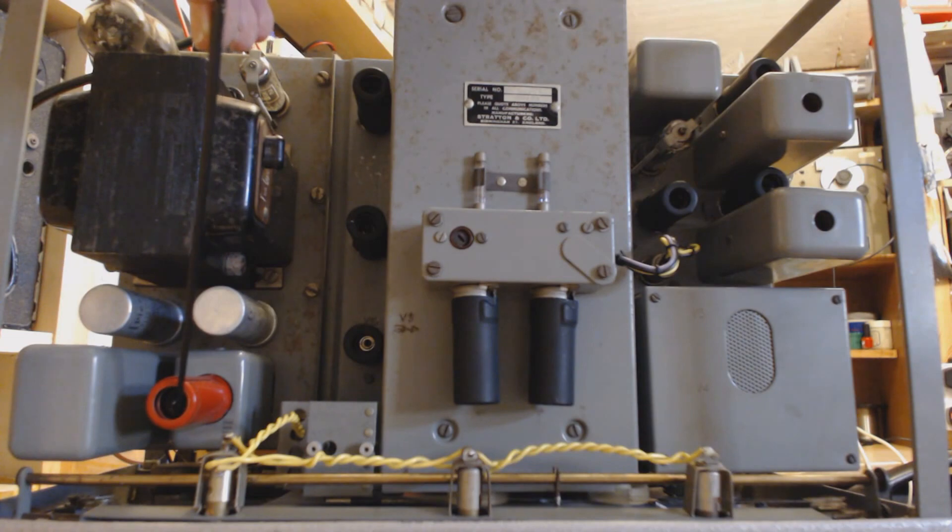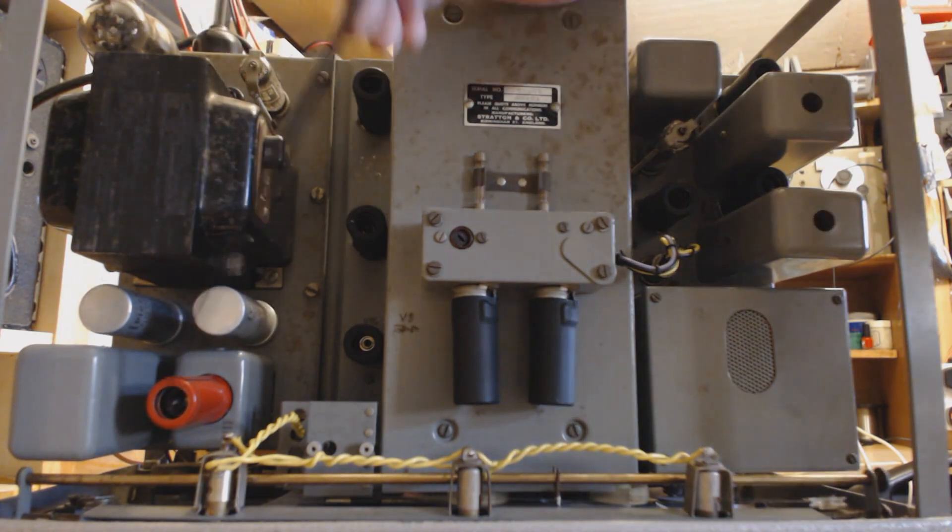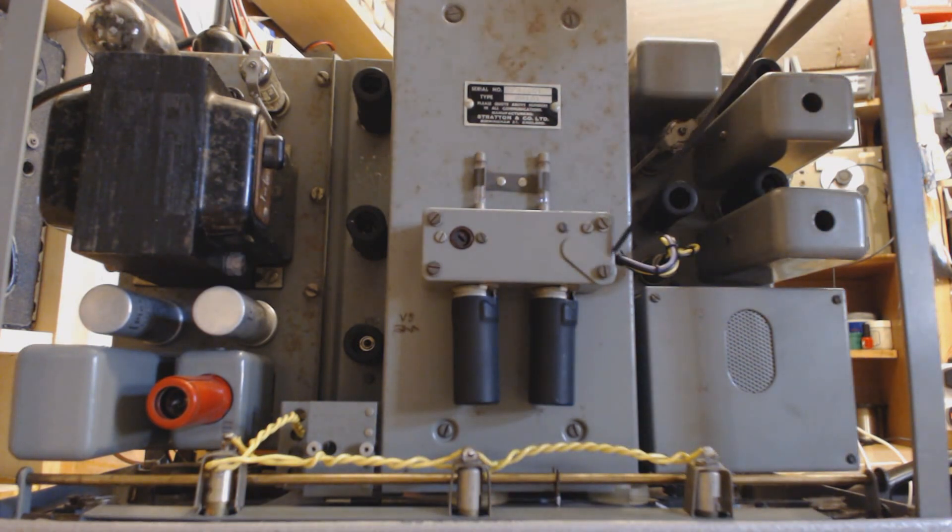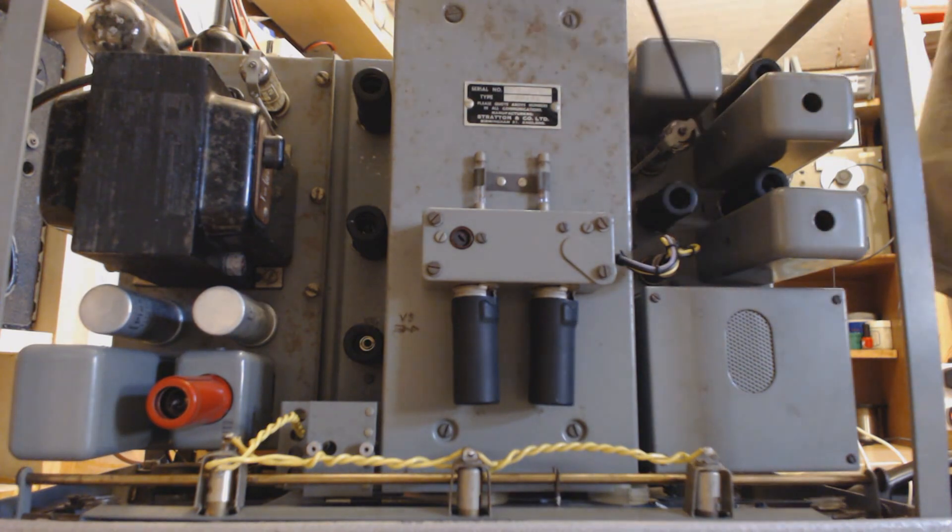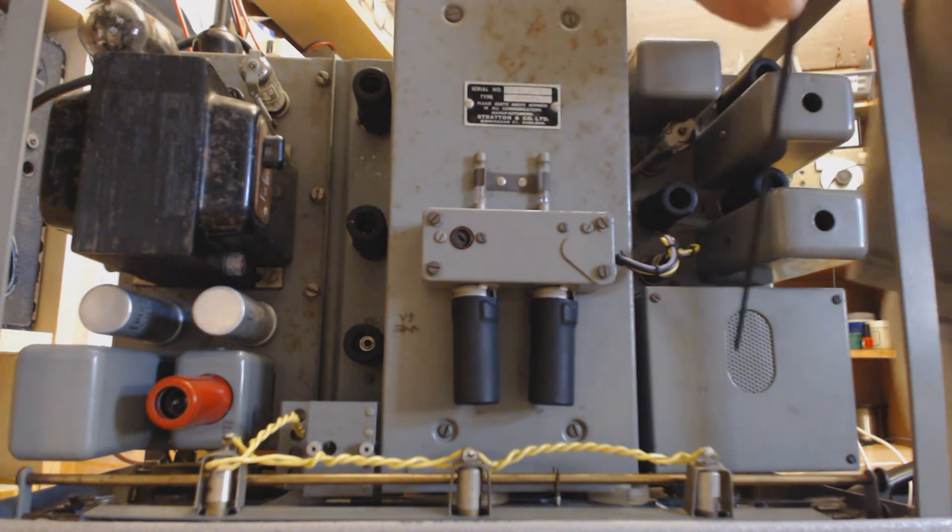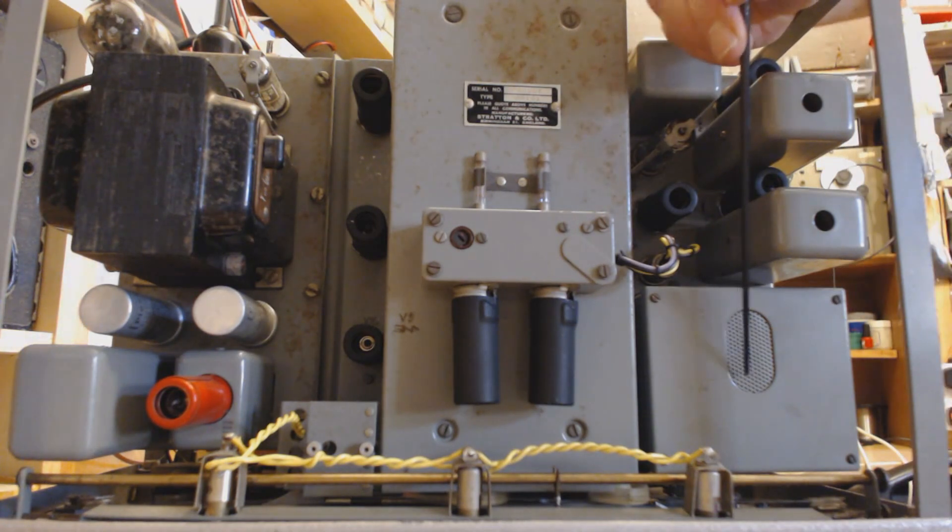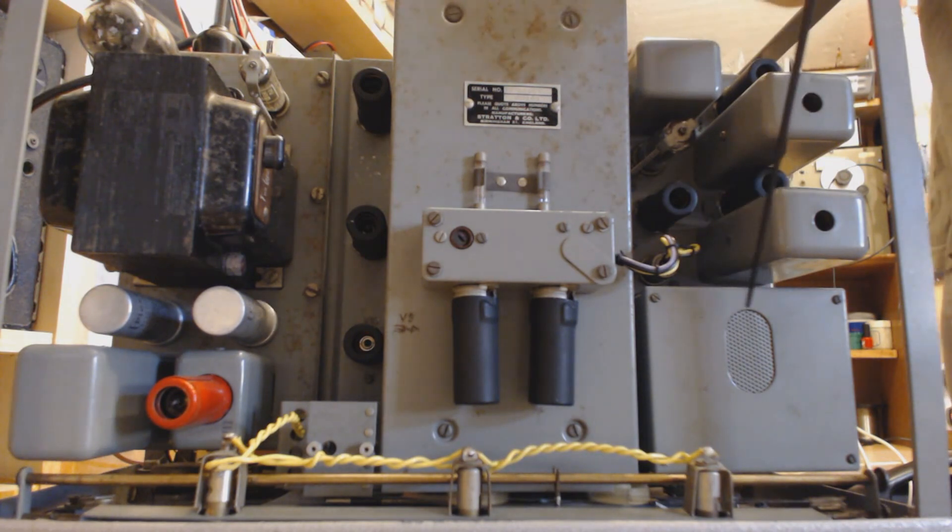That is the BFO and the product detector for resolving sideband and CW. Here, crystal calibrator and this little unit on top. A couple of valves there, that unit plugs in. That's audio output. This, I believe, is detector. This is the audio output transformer. This is detector, 85kc IF amp there. In here is the 1400kc IF amp and mixer oscillator.